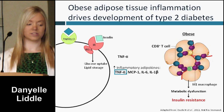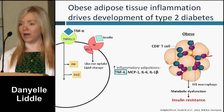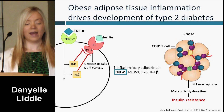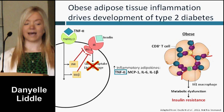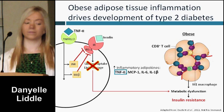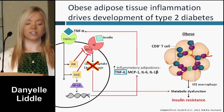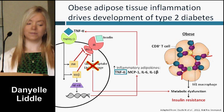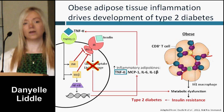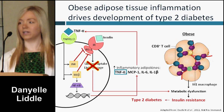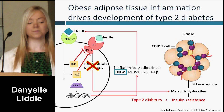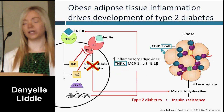Among those adipose tissue infiltrating immune cells, CD8 T cells are the first to accumulate, and they play a critical role in the recruitment of macrophages. Macrophages then polarize to the M1 inflammatory phenotype, and in turn, those M1 macrophages further contribute and exacerbate the inflammatory microenvironment within obese adipose tissue.